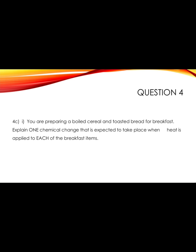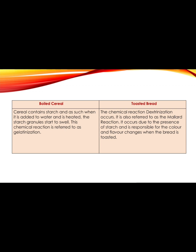Question 4c: you are preparing a boiled cereal and toasted bread for breakfast — explain one chemical change expected when heat is applied to each item. For the boiled cereal, let's say oats: cereals contain starch, and when added to water and heated, the starch granules start to swell. This chemical reaction is referred to as gelatinization.